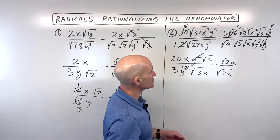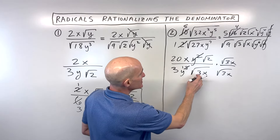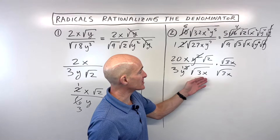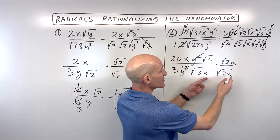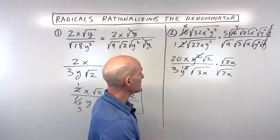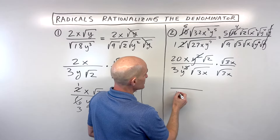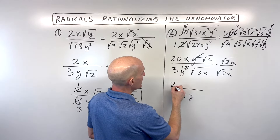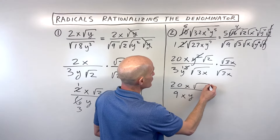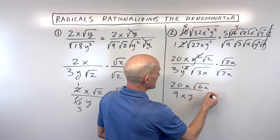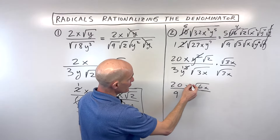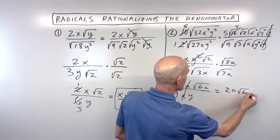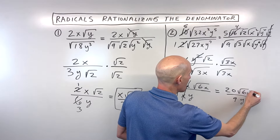That's like multiplying by 1, so it won't change the value — it just changes the way it looks. When you multiply a square root times itself, you get what's underneath the square root. So this would be 3x, or you could think of it as the square root of 9x squared, which is 3x. So 3x times 3 gives us 9x times y in the denominator. In the numerator, we have 20x times the square root of 2, times the square root of 3x — that's the square root of 6x. It looks like the x's are going to cancel. So the final result is 20 times the square root of 6x, all divided by 9y.